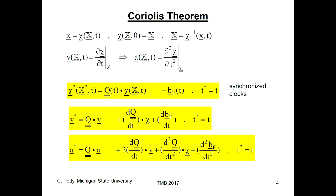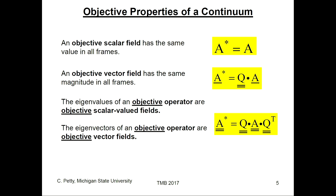The Coriolis theorem maps the motion into the star frame. This is not an objective relationship because of additional terms. The velocity is not an objective property of the field, and neither is the acceleration — yet acceleration is what enters the equation of motion for linear momentum. An objective scalar field has the same value in all frames, and an objective scalar function will be the same scalar function in both frames.